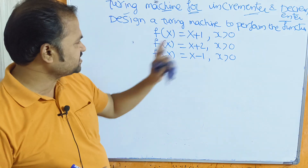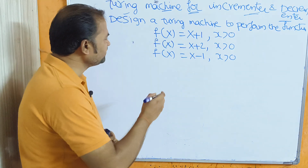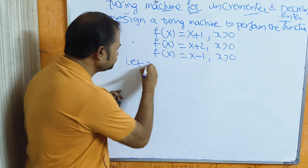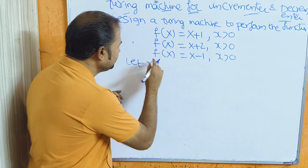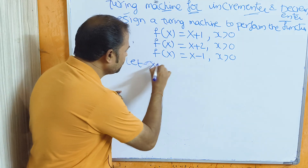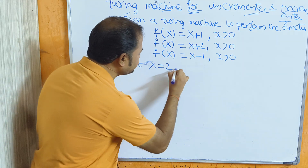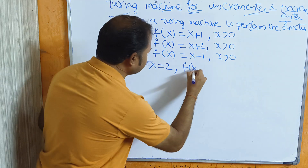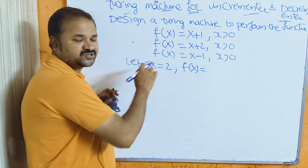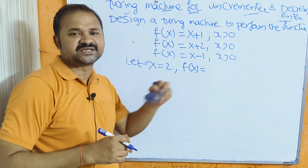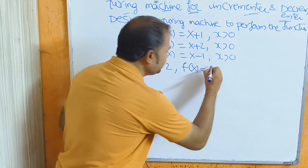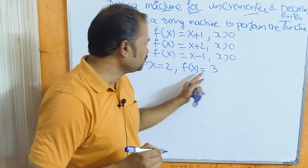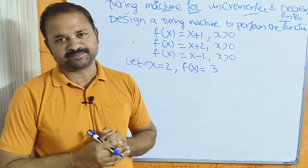First, let's see the incrementer function. Let x = 2. Then what is f(x)? f(x) = x+1, so 2+1 = 3. If x is equal to 2, then we have to display output as 3.